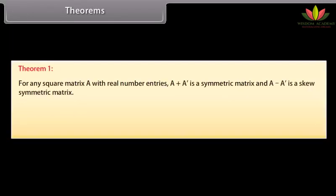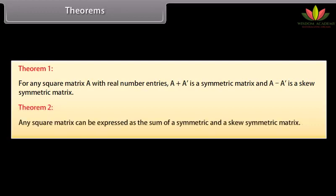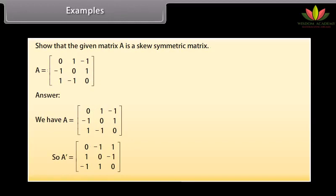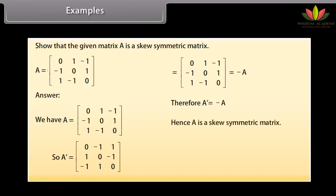Theorems: For any square matrix A with real number entries, A + A' is a symmetric matrix and A − A' is a skew-symmetric matrix. Any square matrix can be expressed as the sum of a symmetric and a skew-symmetric matrix. Example: Show that the given matrix A is skew-symmetric. We have A transpose as matrix row-wise — first row: 0, −1, 1; second row: 1, 0, −1; third row: −1, 1, 0. We can see this equals −A. Therefore A' = −A, hence A is a skew-symmetric matrix.